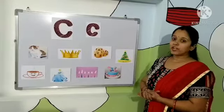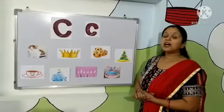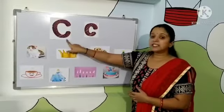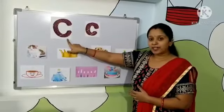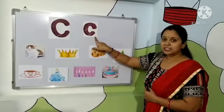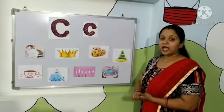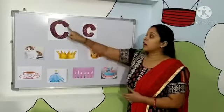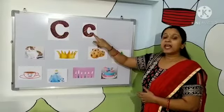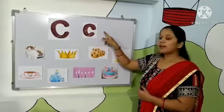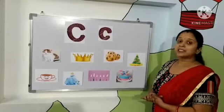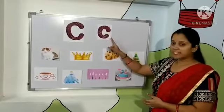So kids, today we have learnt a lowercase letter C. This is an uppercase letter C and this is a lowercase letter C. Both are in curve shape and open from the right side. Let's revise the objects that start from letter C.